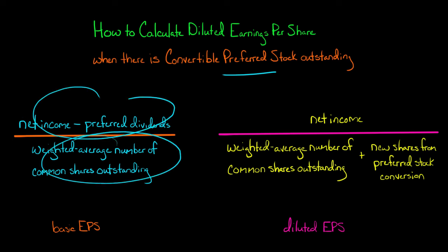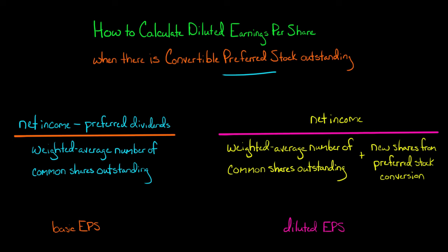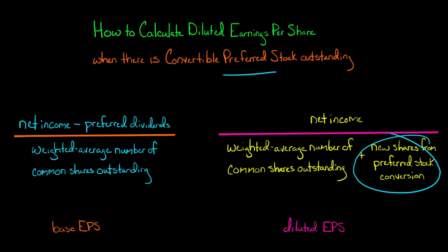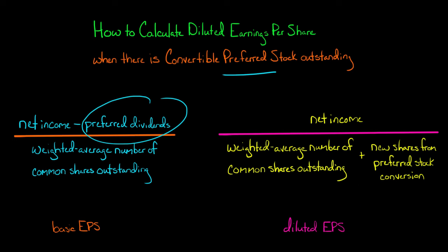When we have convertible preferred shares outstanding and we're trying to calculate diluted earnings per share, we need to make a couple of adjustments to both the numerator and the denominator. First, in the numerator we are not going to subtract the preferred dividends, because we're assuming those preferred shareholders had converted their preferred shares to common shares at the beginning of the period — so they would no longer be preferred shareholders. Then in the denominator, we add the number of new common shares from that preferred stock conversion, so the denominator goes up and the numerator is higher as well.